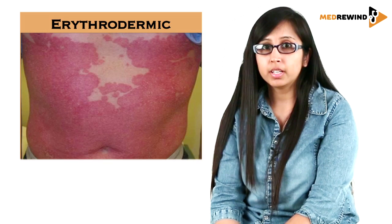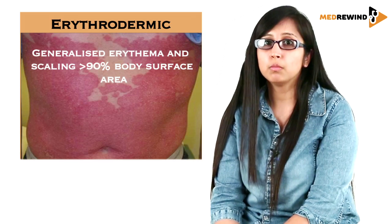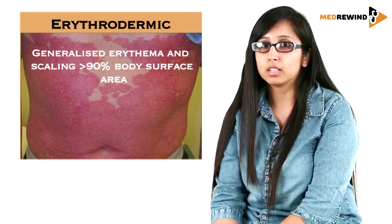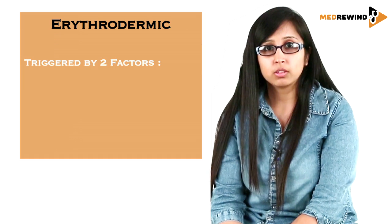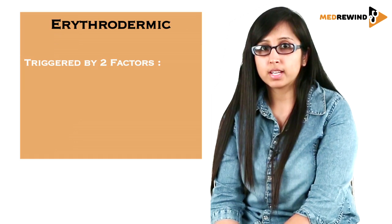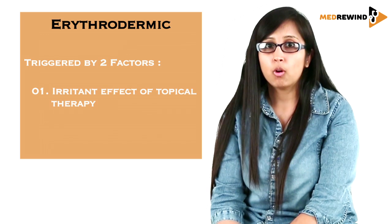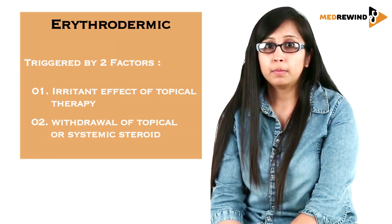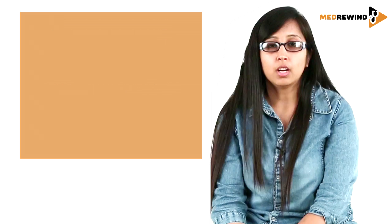Another variant is the erythrodermic type. In erythrodermic psoriasis, there is generalized involvement of the skin — more than 90% of body surface area — in the form of generalized erythema and scaling. This can also be triggered by the same two factors: the irritant effect of topical therapy or withdrawal of steroids. The main problem is the metabolic complications associated with it.